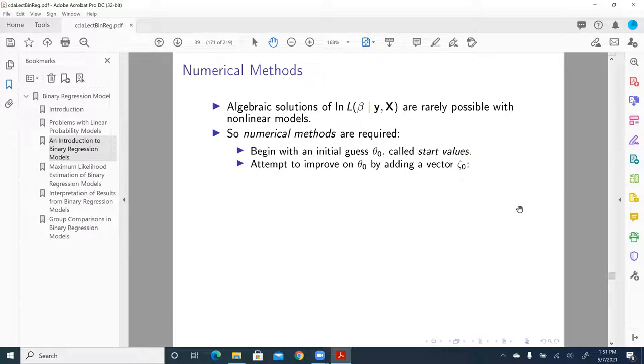And then we attempt to improve theta zero by adding a vector zeta zero. So once we get zeta zero, and once we get theta one, we can add another zeta.